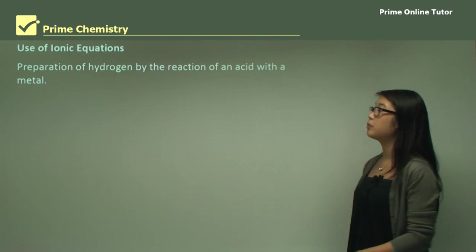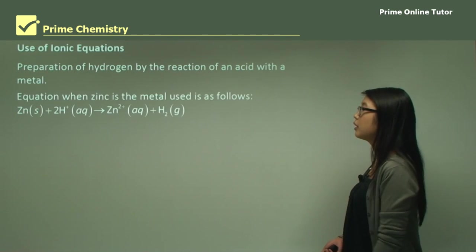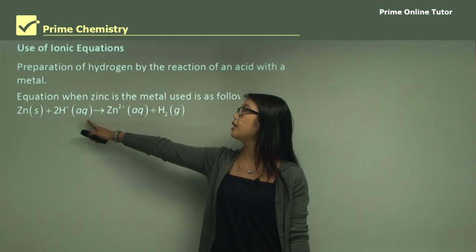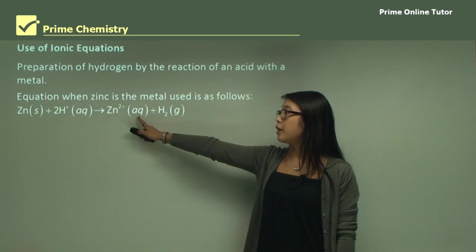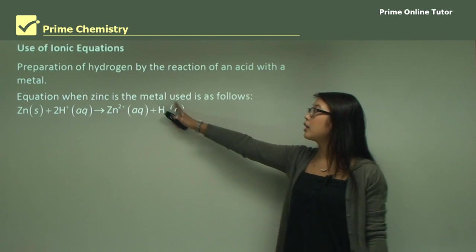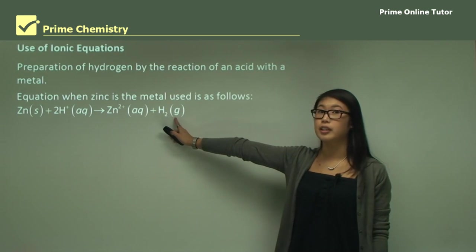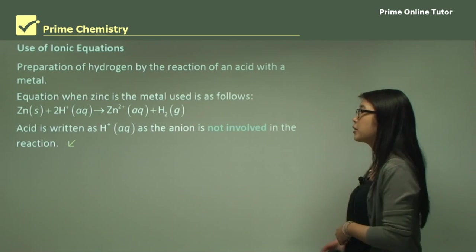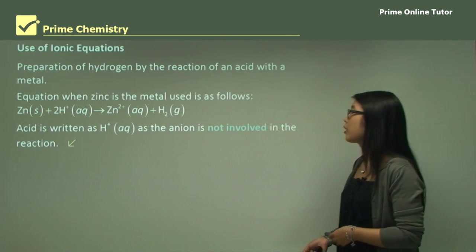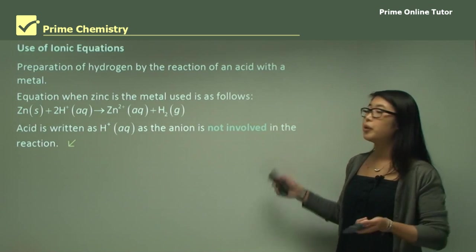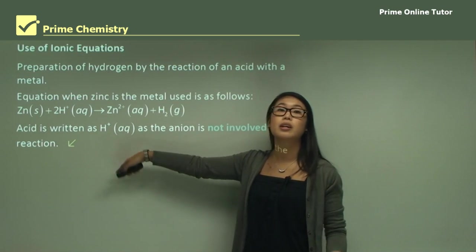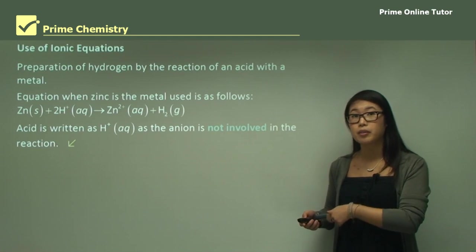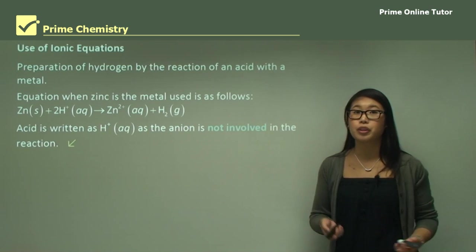The preparation of hydrogen by the reaction of acid with a metal can also be written as an ionic equation. Here we look at zinc: zinc as a solid plus acid protons (H+) gives zinc ions in aqueous solution — because they dissolve in water — plus hydrogen gas (write the G). The acid is written as the proton H+ in aqueous solution. The anion isn't involved, so we don't include it — for example, in HCl, the Cl isn't involved. When writing ionic equations, check whether the question asks for the net equation, and if so, don't include spectator ions.